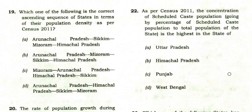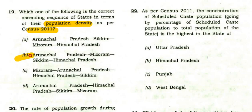Now the general knowledge questions begin. Which is the correct ascending sequence of states in terms of population density as per Census 2011? The right answer is: Arunachal Pradesh (lowest density), then Mizoram, then Sikkim, then Himachal Pradesh.